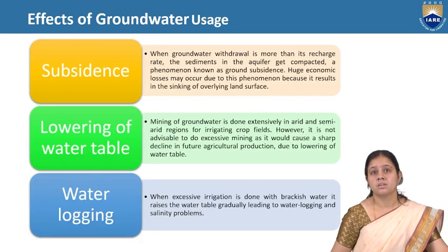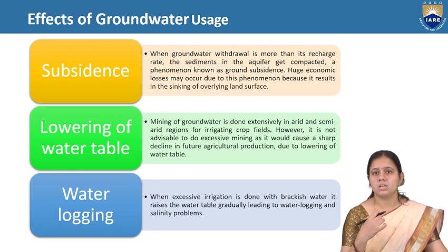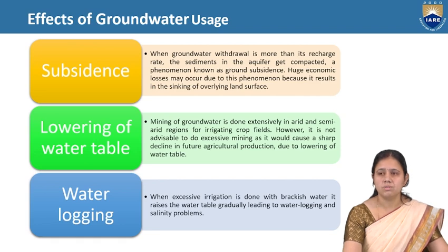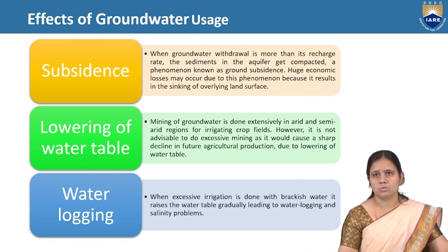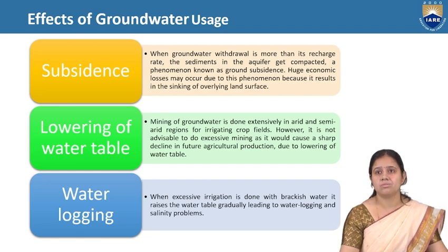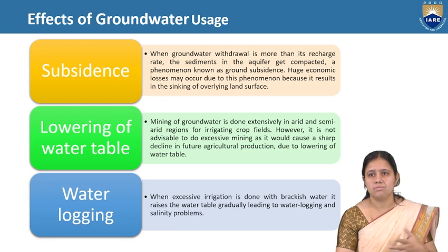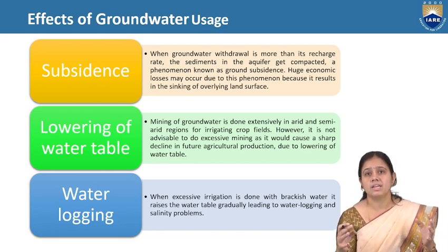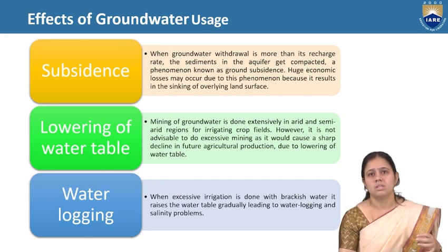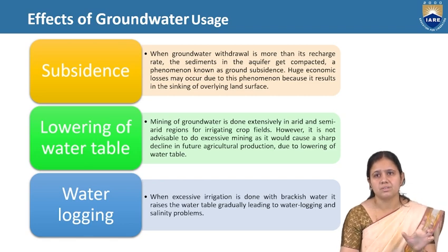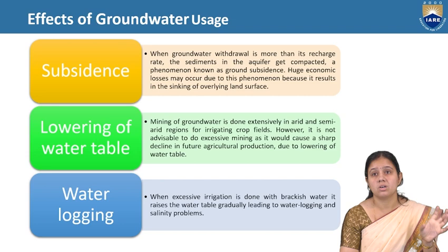Effects of groundwater overuse: the first is subsidence. When groundwater withdrawal exceeds the recharge rate, the sediment in the aquifers gets compacted — a phenomenon known as ground subsidence. When groundwater is withdrawn more than the aquifer's recharge capacity, the aquifer will neither recharge nor yield water. This results in the sinking of the overlying land surface and huge economic loss.